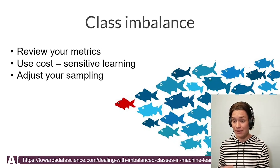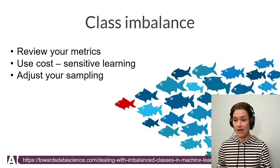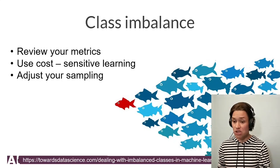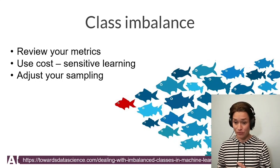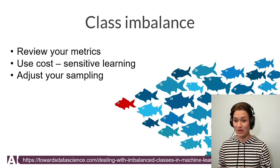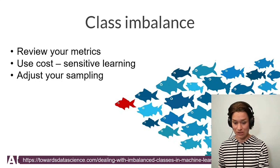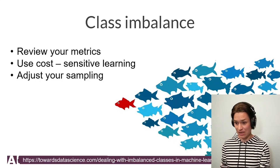We can adjust our sampling. We can either oversample — look for many examples of the underrepresented class to balance it with the overrepresented, finding more red fish in other images — or we can undersample by taking fewer blue fish. So we can do either oversampling or undersampling depending on which class we're feeding more data from and which we're feeding less.